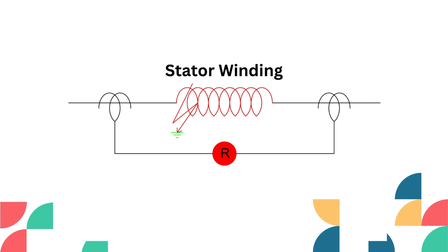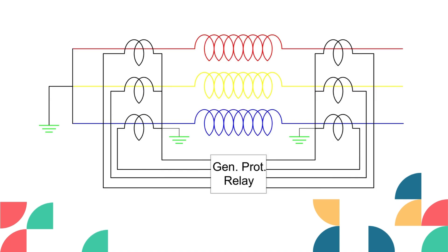To understand more deeply, we need to understand the connections inside the generator. To measure the incoming and outgoing current of each winding, CTs are connected to both the neutral side and the outgoing terminal side of each phase of the stator winding. For a 200-megawatt generator, approximately 9,000 to 10,000 amperes flows through each phase. However, the relay is not designed to handle these high currents. These CTs will drop the value and send the current to the generator protection relay.